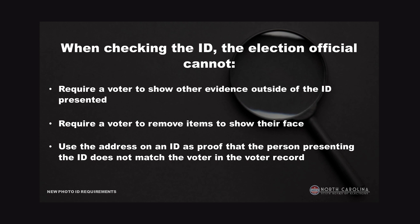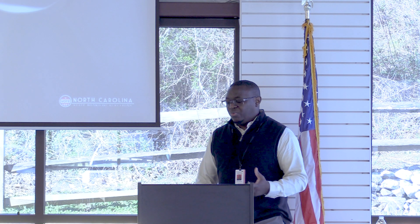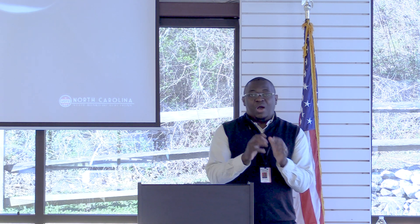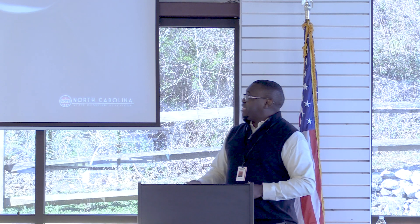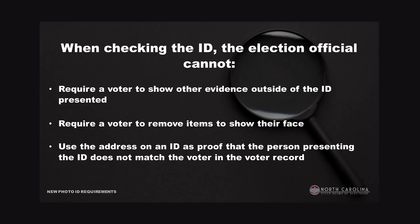Election officials are not allowed to ask for another form of ID. However, if you offer another form of ID — maybe you can tell they're struggling — you can say 'Wait, I have something else,' and they can use that if it's acceptable. They cannot require you to remove anything: glasses, head covering, hat, or even a mask. However, if you offer to pull down the mask, they'll be able to see your face better and it makes the process easier. But they can't require it.